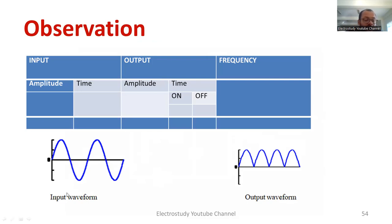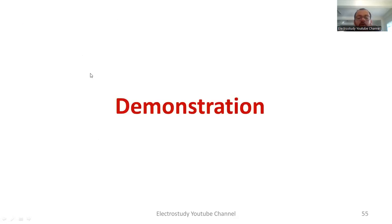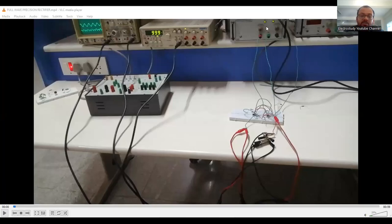The expected waveform will be in this fashion. We have the input waveform sinusoidal and we should get the steady state output like DC output. That is the observation you are supposed to make for this particular experiment. Now I will be taking you the demonstration of precision full wave rectifier. I think screen is visible to everybody.